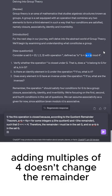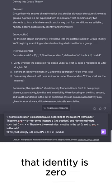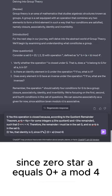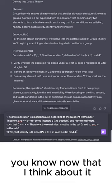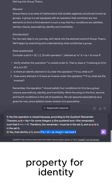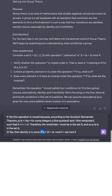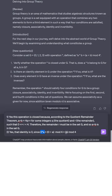But to be more clear, adding multiples of 4 doesn't change the remainder when divided by 4. So the answer is yes, that identity is 0 since 0*a equals 0+a mod 4, which is just a mod 4. You know, now that I think about it, I don't know if this satisfies the property for identity because when I think about multiplication, 0 times anything is just 0. But here we got a.